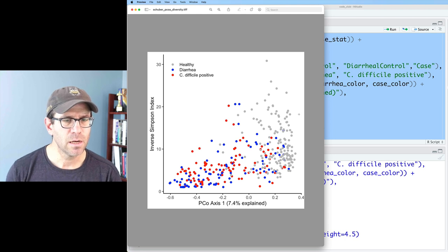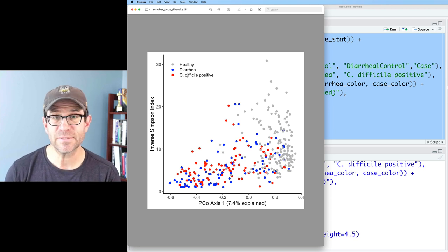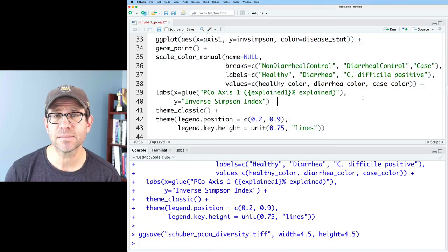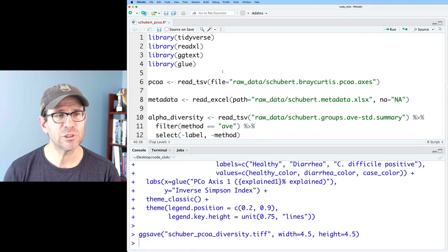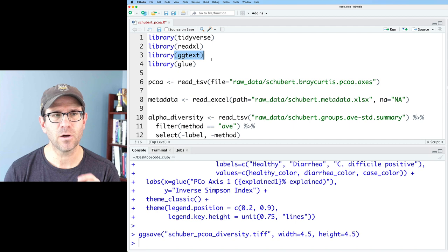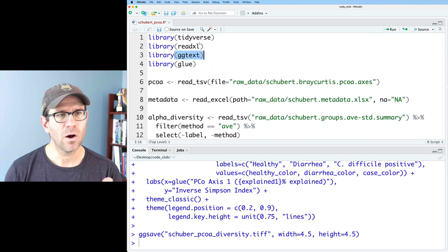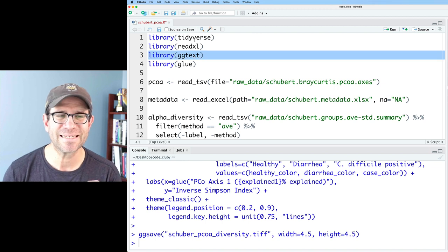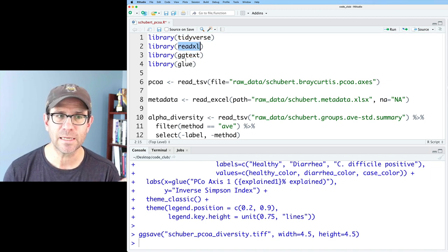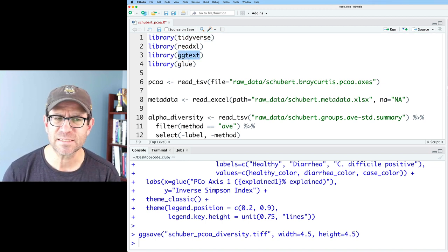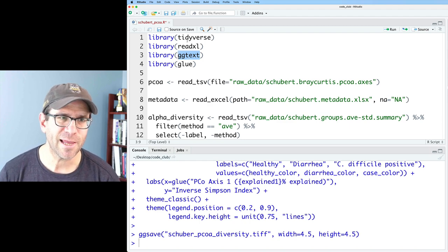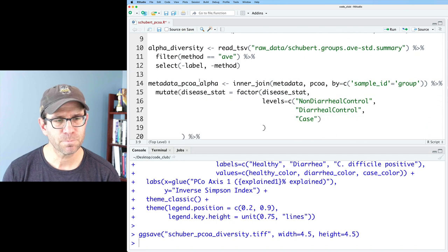Let's go ahead now. And this C difficile is not italicized, but we can make it italicized using the ggtext package, which I called up here. I should mention that all of these packages come installed except for ggtext. If you install tidyverse, you get read Excel and glue, but ggtext has to be installed separately.